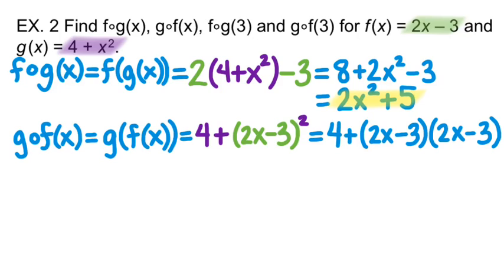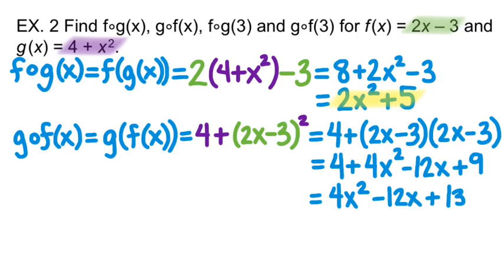So I'm going to have my 4 that's out front. When I FOIL out the binomials, you're going to get 4X squared minus 12X plus 9. Then when I combine like terms, I'm going to get 4X squared minus 12X plus 13.